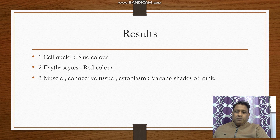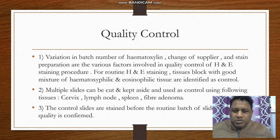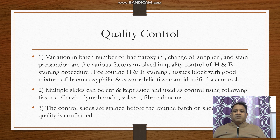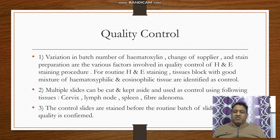The results: cell nuclei appear blue, erythrocytes red, and muscles, connective tissue, and cytoplasm show varying shades of pink. For quality control, variation in batch number of hematoxylin, change of supplier, and stain preparation are key factors. Tissues with a good mixture of hematophilic and eosinophilic tissue are used as controls — such as cervix, lymph node, spleen, and fibroadenoma. Control slides are stained before the routine batch to confirm staining quality.